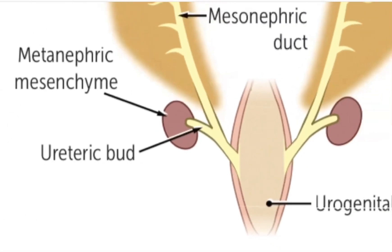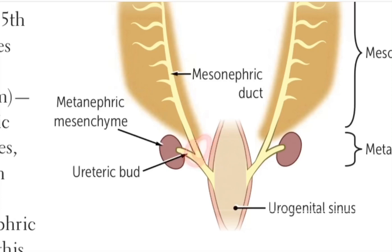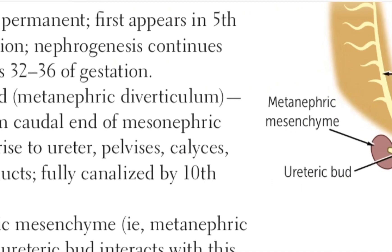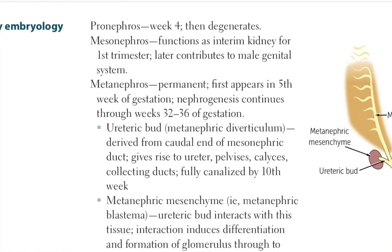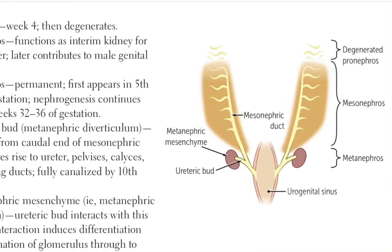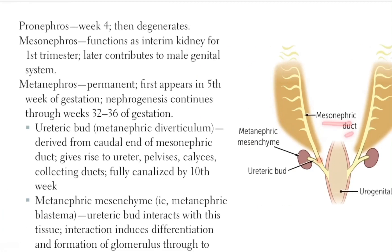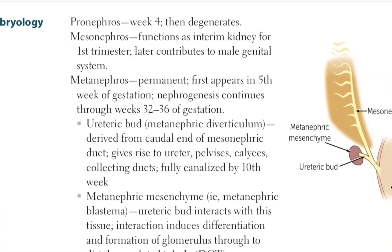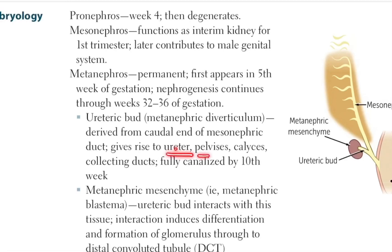This structure is called as the ureteric bud, which is also called as the metanephric diverticulum. The ureteric bud is derived from the caudal end of the mesonephric duct. It gives rise to various structures such as the ureter, pelvis, calyces, and the collecting ducts.